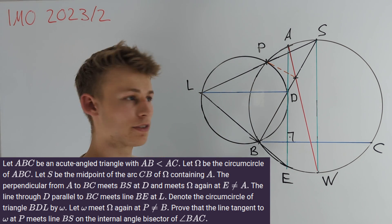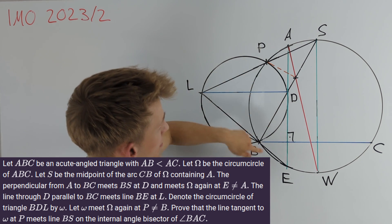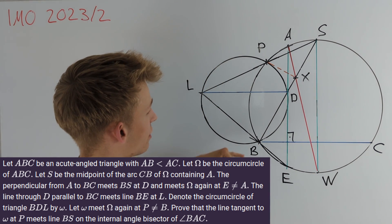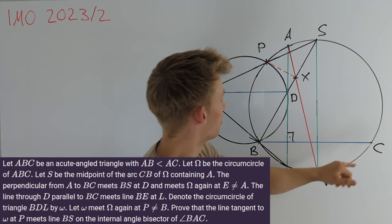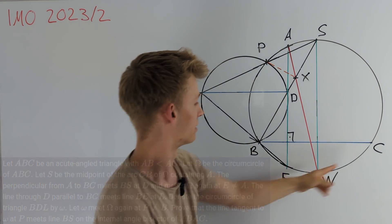We are asked to prove that the tangent to this circle here going through the point P intersects BS at a point X that lies on the angle bisector of BAC which is the line AW where W is the midpoint of the minor arc BC.